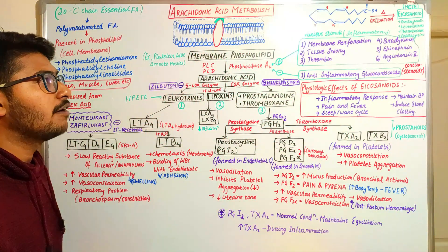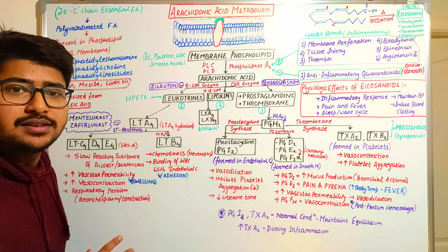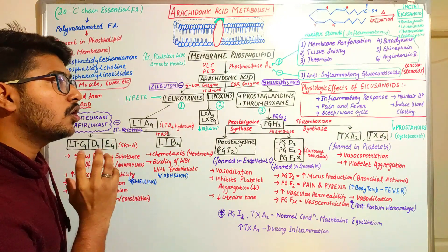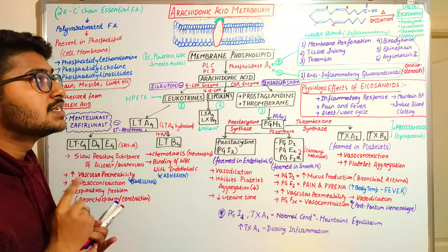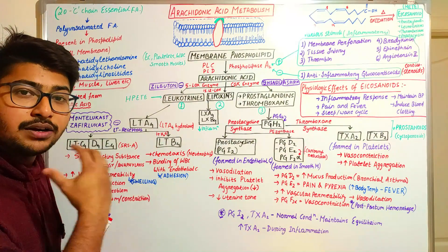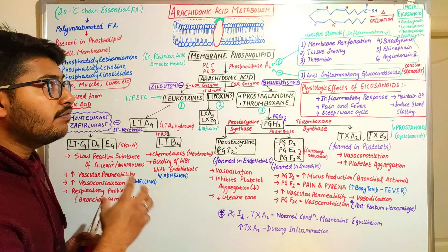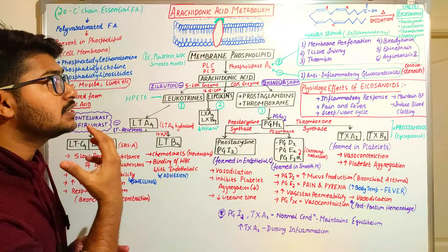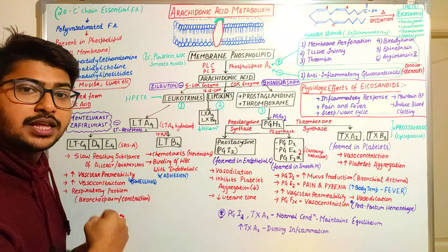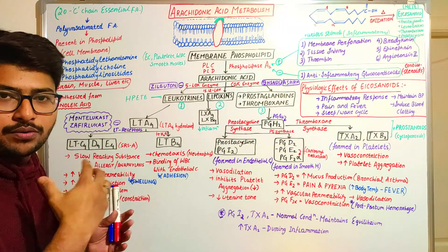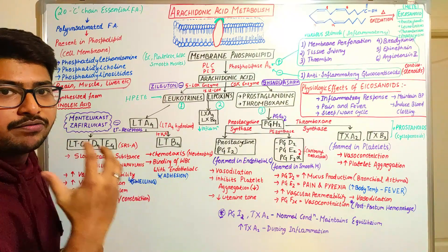We are going to discuss four most important things in this topic: first, what is arachidonic acid; second, what is the stimuli that induces this reaction; third, what are the mediators produced in this metabolism reaction; and fourth, what are the different kinds of effects on our body during the process of inflammation or normal physiological reaction.